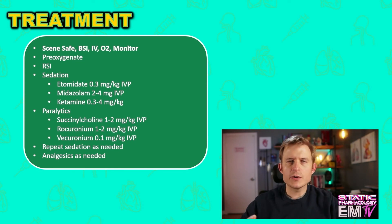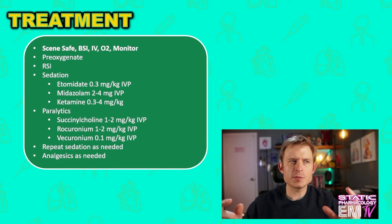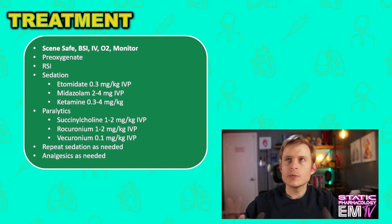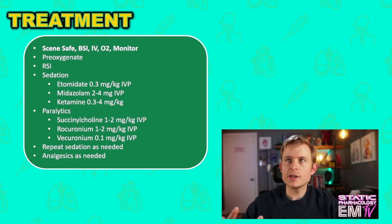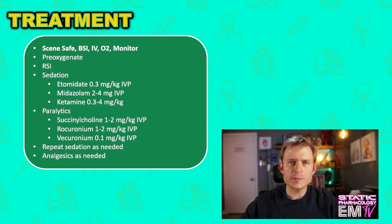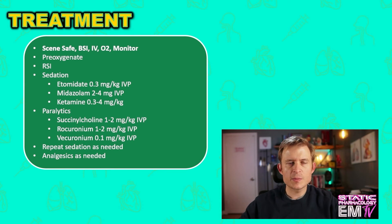Vecuronium does provide an extra added layer of safety, because it has to be reconstituted — it comes as a powder and you have to mix it with sterile water. Be aware, though, that when you choose a long-lasting paralytic such as vecuronium, if you miss the tube, your patient will remain paralyzed for the duration of that medication. Succinylcholine has a fairly short duration of action, usually lasting less than 10 minutes, so this is primarily what is kept pre-hospitally. There are some downsides to its use, which we won't cover today.